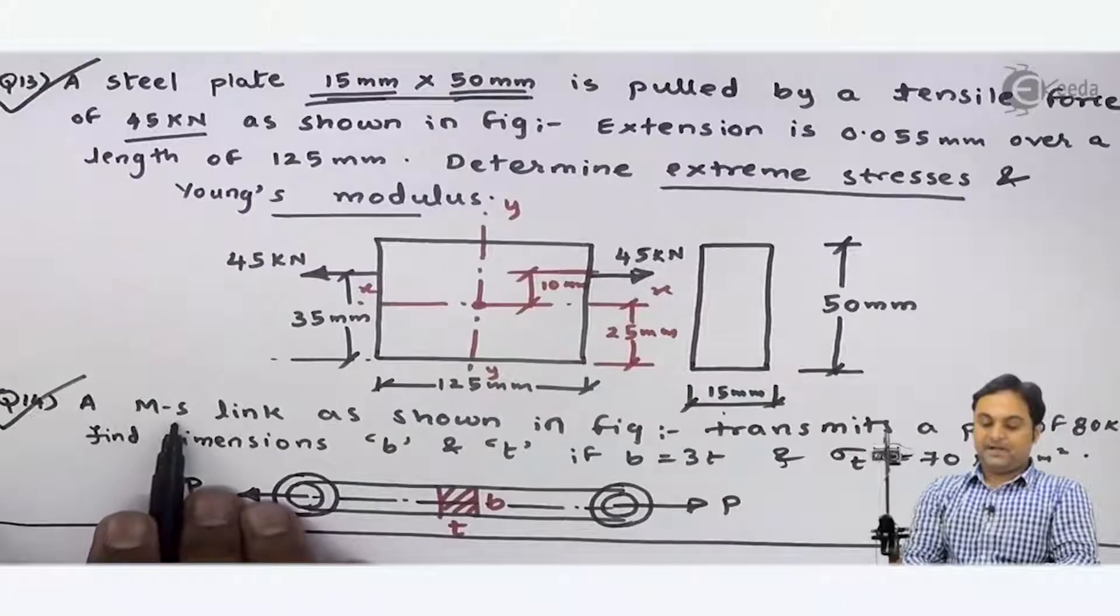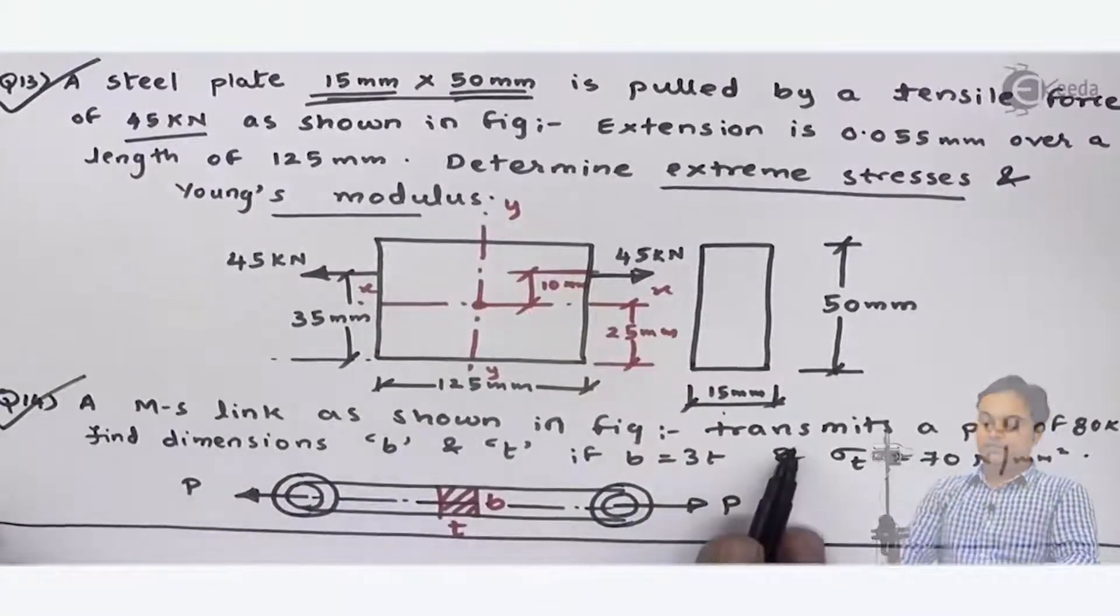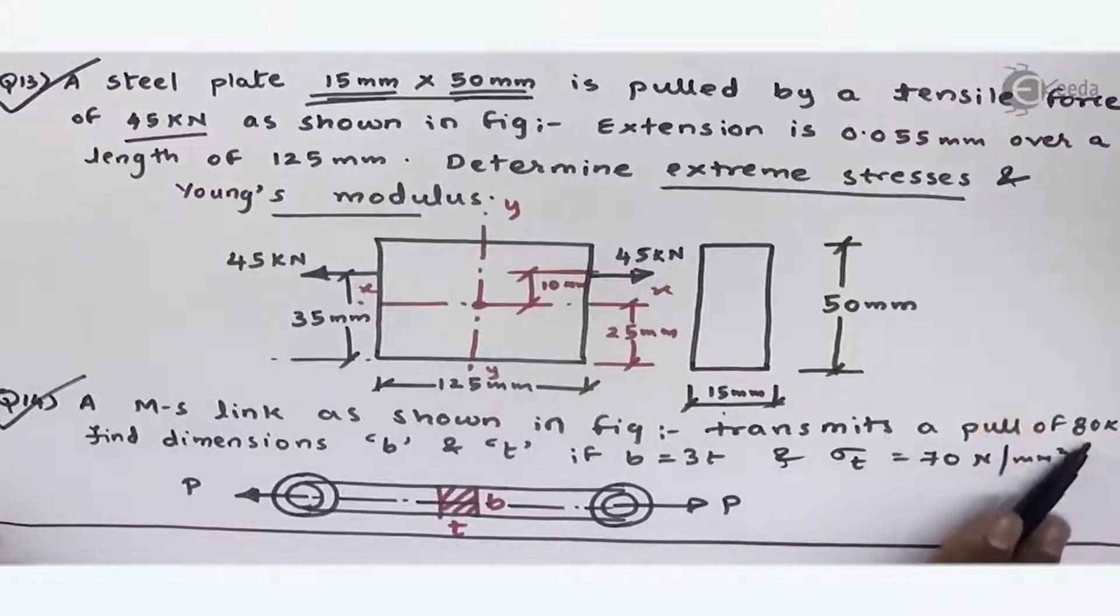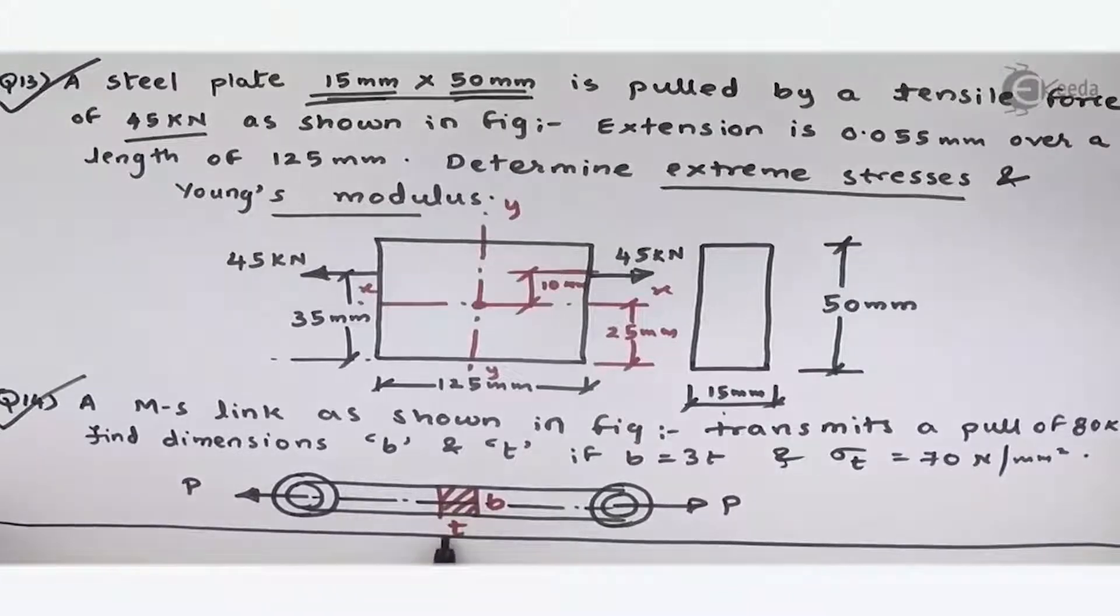A mild steel link, as shown in figure, transmits a pull of 80 kilonewtons. Find dimensions B and T. Here on the section, it is a rectangle having width B and thickness T.